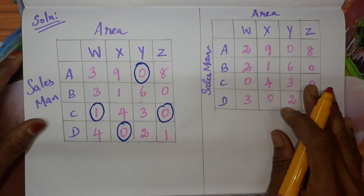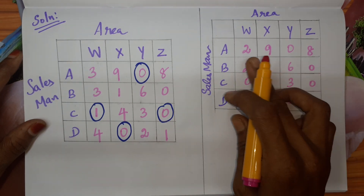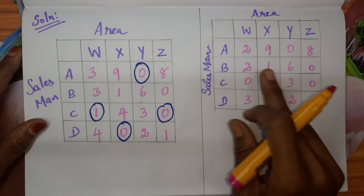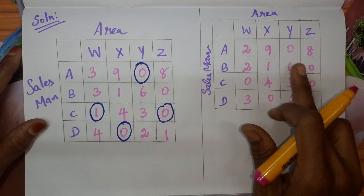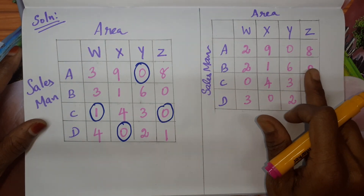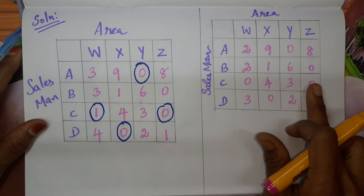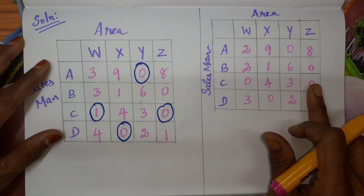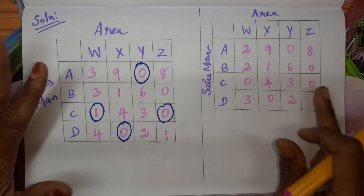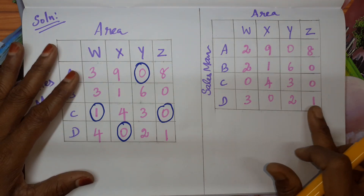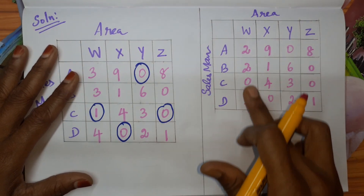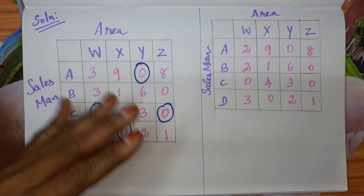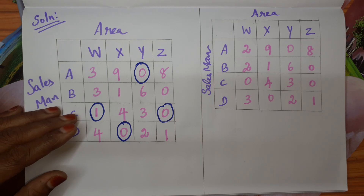After these two steps — row-wise and column-wise reduction — in every row and every column we will have at least one zero. Checking row-wise: the first row has one zero, the second row has one zero, the third row has two zeros, and the fourth row has one zero. Column-wise, we also have at least one zero in each column. Now we are going to make the assignment.